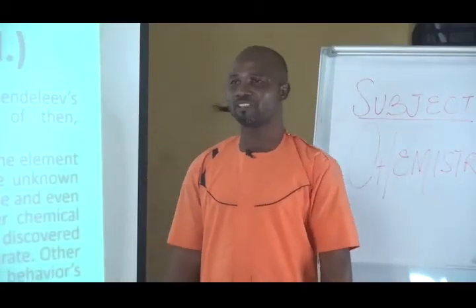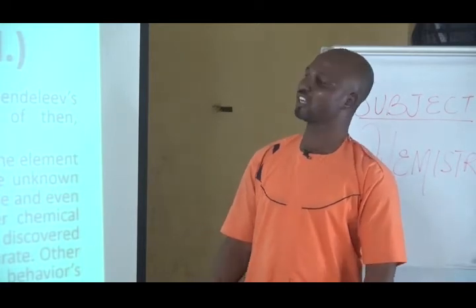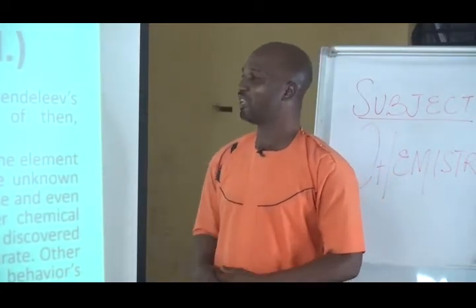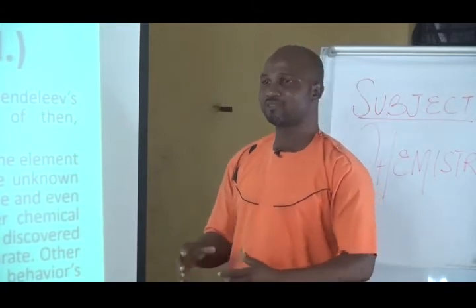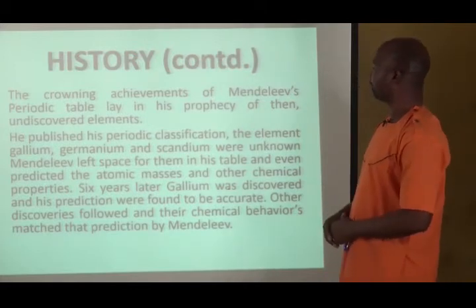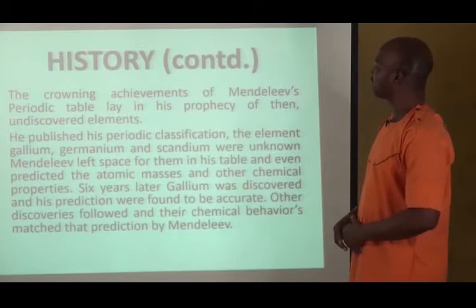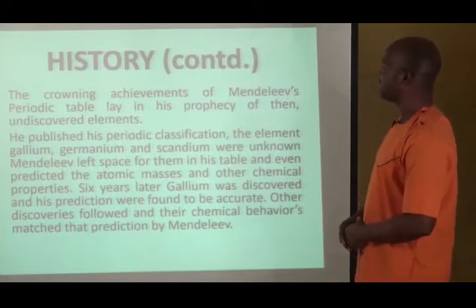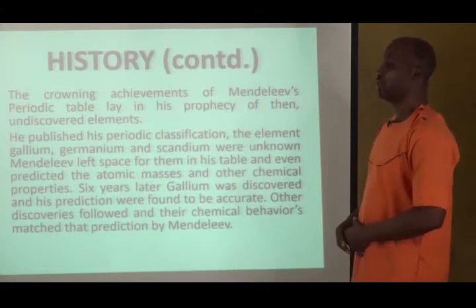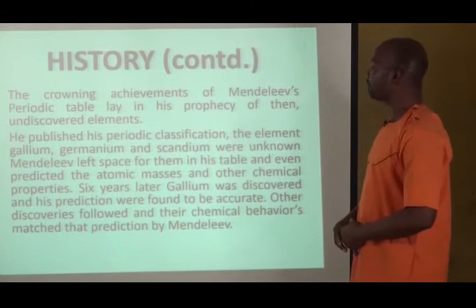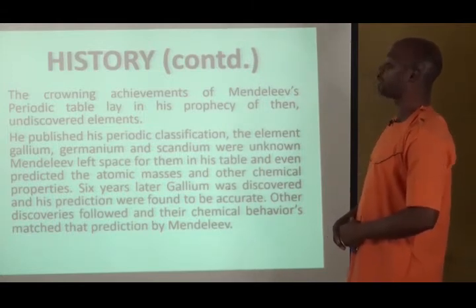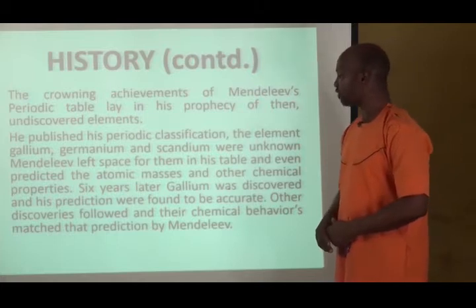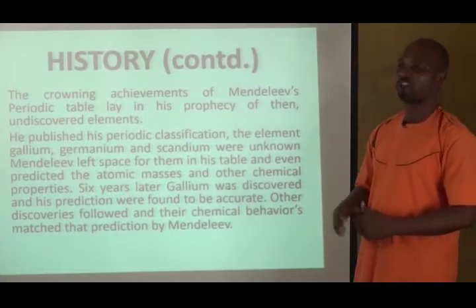He formulated his discovery in the Periodic Table of Elements, now regarded as the backbone of chemistry. Crowning his achievement is the fact that he was able to predict seven elements that were not in existence, and he was able to place them in their groups as well as give their properties. The elements Gallium, Germanium, and Scandium were unknown. Mendeleev left space for them in the Periodic Table and even predicted their atomic masses and other chemical properties. Six years later, Gallium was discovered and his predictions were found to be accurate.